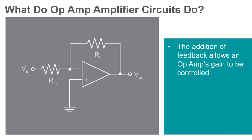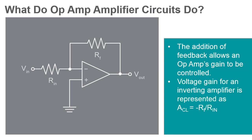The addition of the feedback resistor allows the gain of the op-amp to be controlled and calculated. In the inverting amplifier circuit depicted, overall voltage gain can be easily calculated using this formula: ACL equals negative RF over RIN, where ACL represents the closed-loop gain. That means if RIN is 1K and RF is 10K, the voltage gain of the circuit will be negative 10.